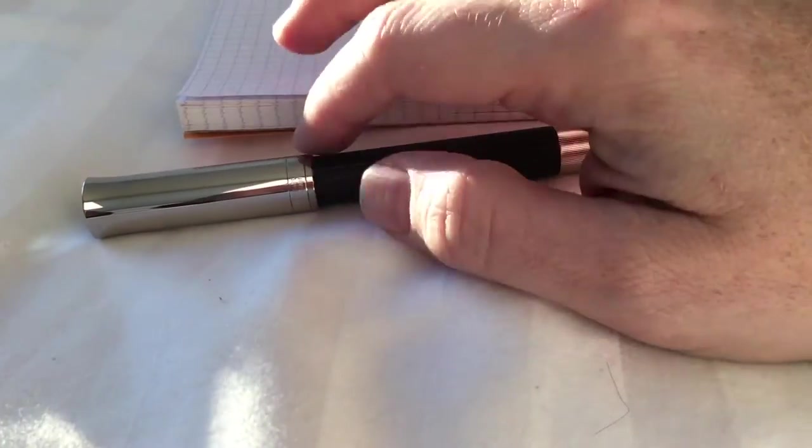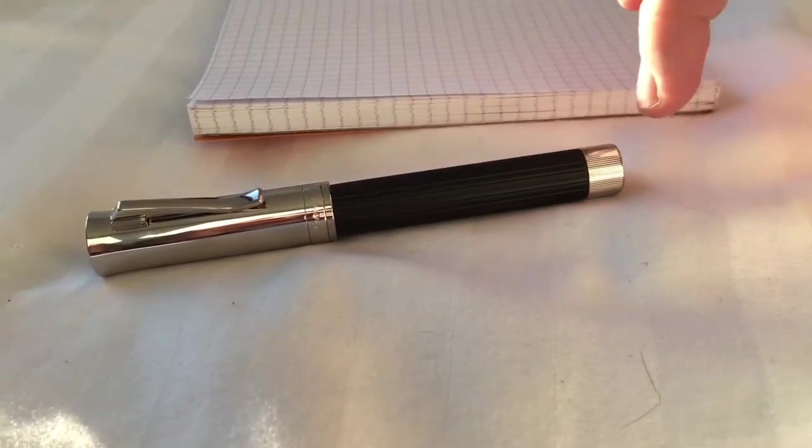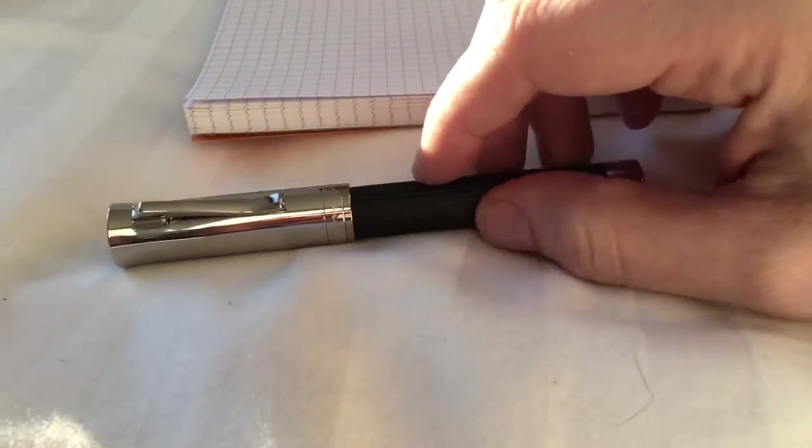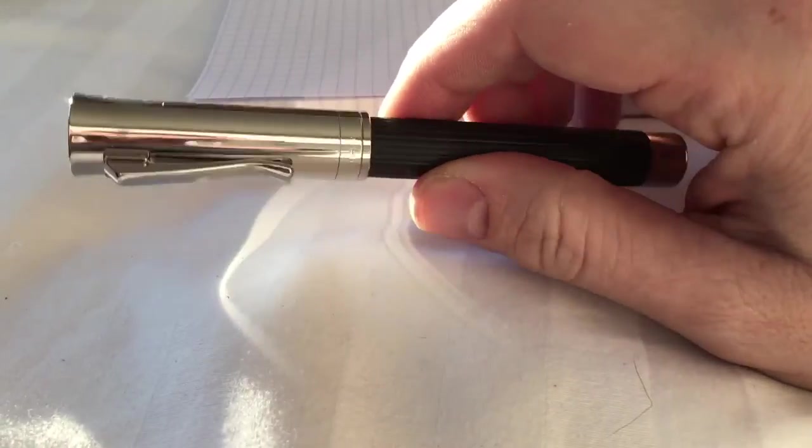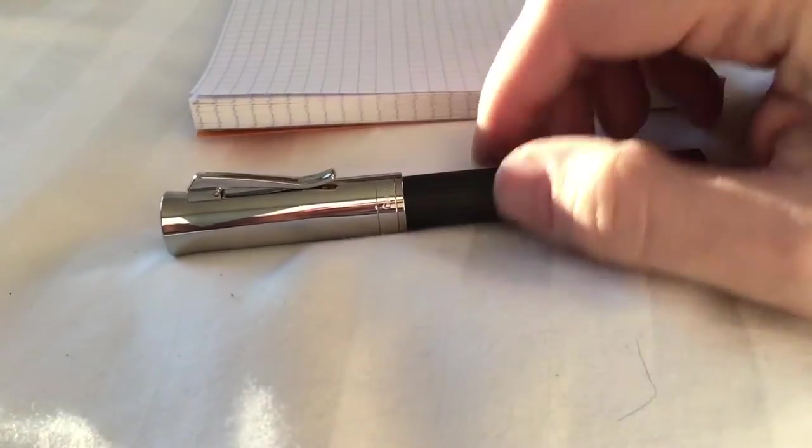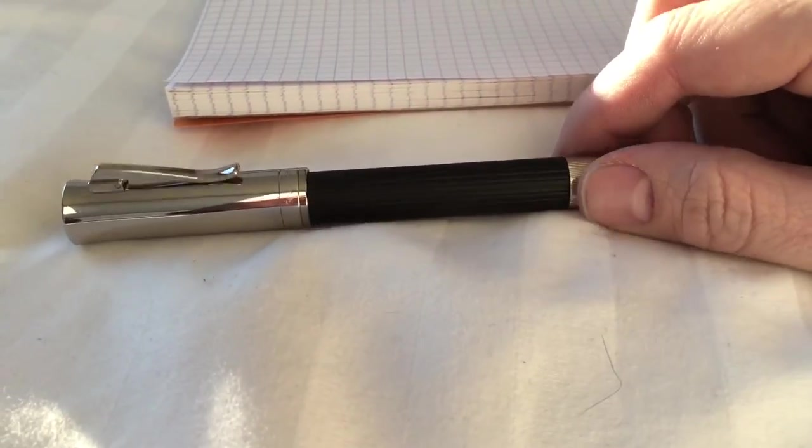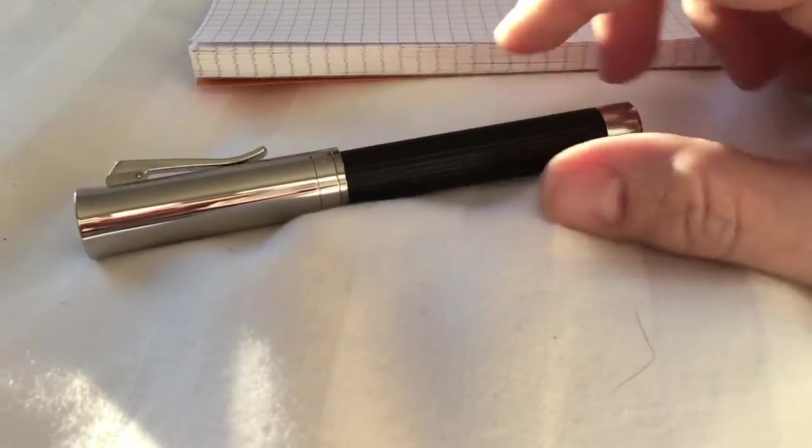You have this chrome section of the pen here where it's metal, and then you have this section which is wood, and then another chrome section at the end. I don't know enough about fountain pens to know the names for all these various parts, but I'll do the best I can to review what I think about the pen. Frankly, there weren't very many high quality videos on YouTube on this pen.